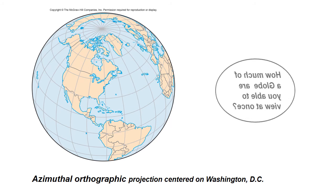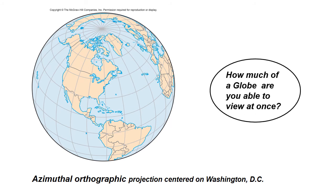How much of the globe are you able to view at once? Only half — and that's another reason why we use maps instead of globes. If you want to show the whole world, a globe requires you to keep turning it around, whereas a world map shows it all at once.